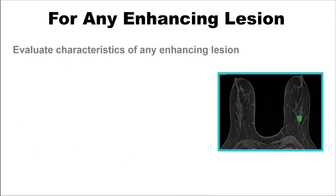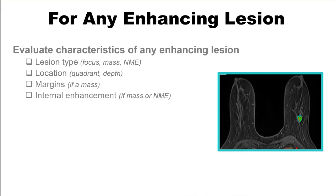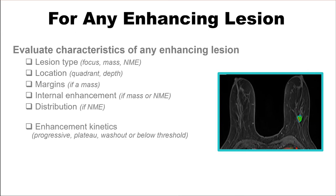For any enhancing lesion identified on a breast MRI, evaluate the following characteristics: the lesion type — is it a focus, a mass, or non-mass enhancement? The location — what quadrant is it in, and what is the depth: anterior, middle, or posterior? What are the margins if it is a mass? What is the internal enhancement — is it homogeneous or heterogeneous? The distribution, if it's non-mass enhancement — is it segmental, regional, or focal? Then evaluate the enhancement kinetics: progressive, plateau, or washout enhancement. Or maybe it's very minimal enhancement that's below threshold for kinetic analysis.